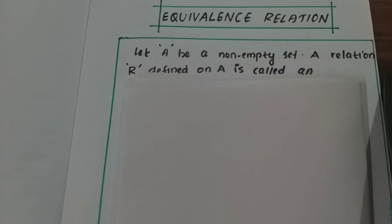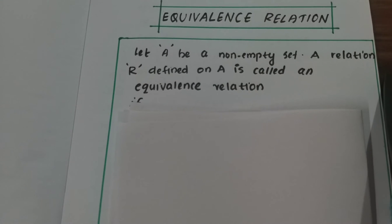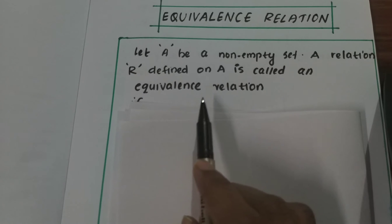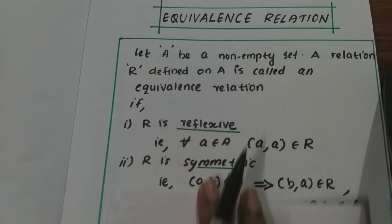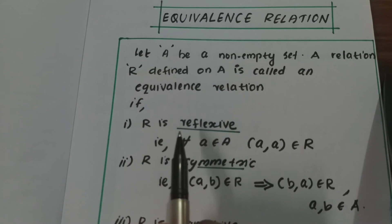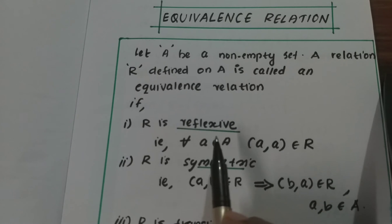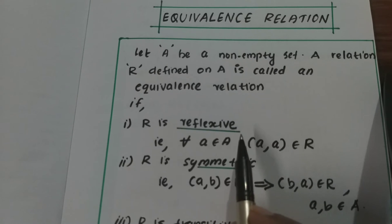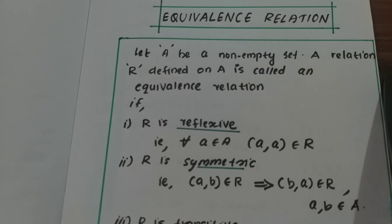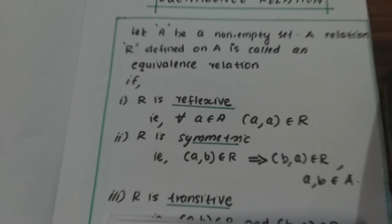Now, how do you qualify a relation as an Equivalence Relation? If you want to qualify a relation as an Equivalence, then first, let us define. Let A be a non-empty set. A relation R defined on A is called an Equivalence relation if: first, R is reflexive; second, R is symmetric; and third, R is transitive.